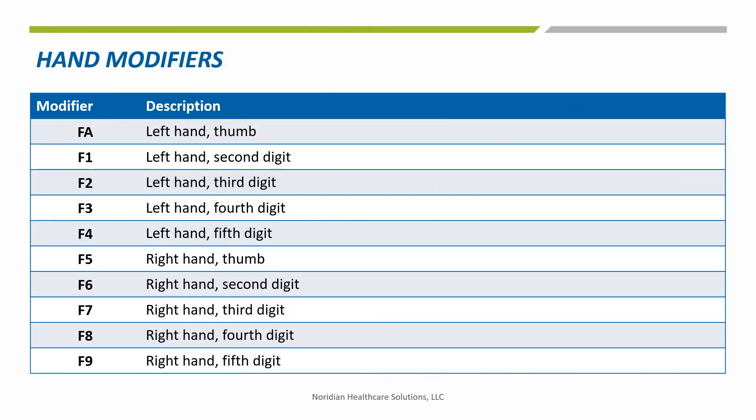With some procedure codes, it is appropriate to report a digit modifier indicating the finger on the hand upon which the procedure was performed. Digit modifiers are listed here and are separated by left hand and right hand. These modifiers are appropriately reported when a service is performed on the digit described. It is inappropriate to use these modifiers when the code descriptor describes all digits or gives a set number of digits.